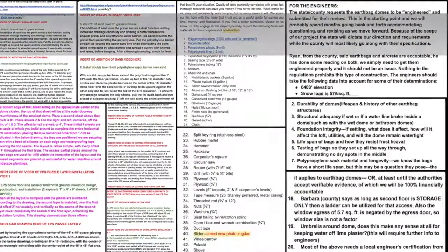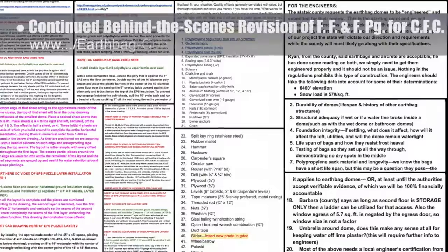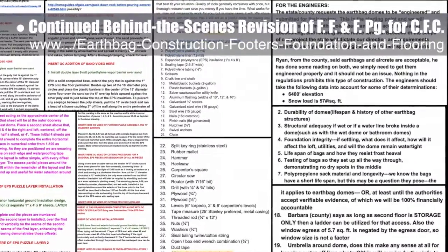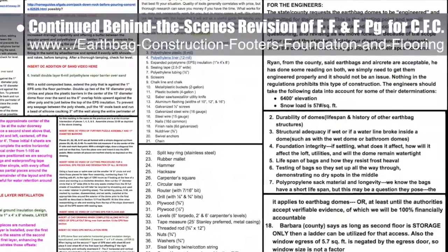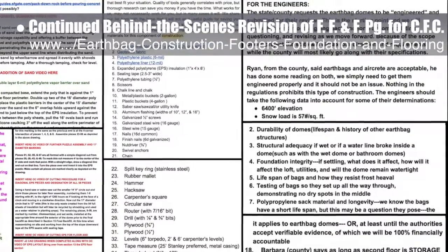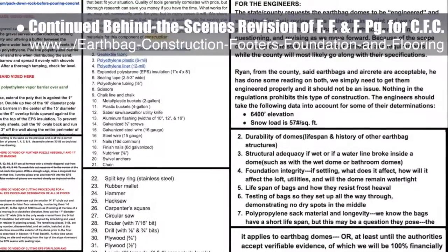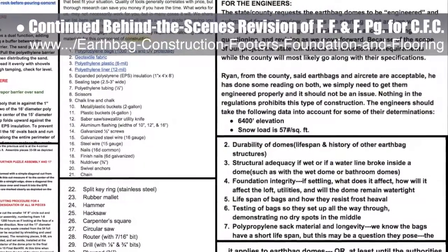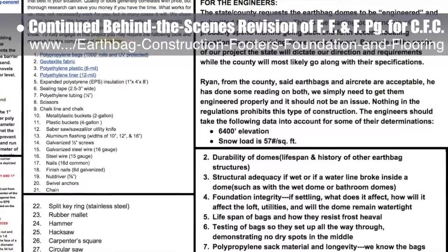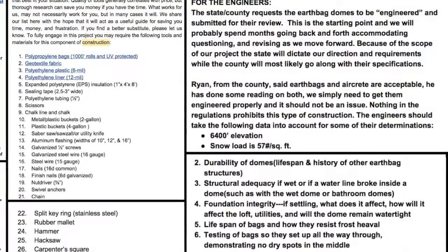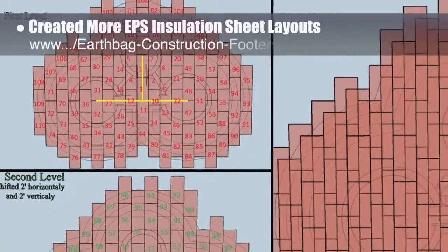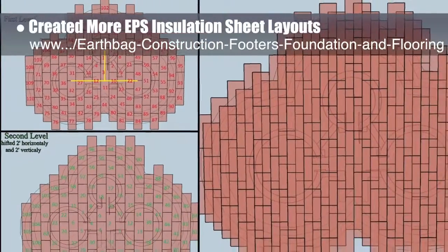The core team also put another 10 hours into the behind-the-scenes revision for the footers, foundations, and flooring page for the crowdfunding campaign we are developing. This week, we adapted the single-dome expanded polystyrene EPS layout to a three-dome cluster configuration. We also reviewed the openings doc for additional rewrites to the narrative for specifications and locations of the doors and windows, and created more EPS insulation sheet layout updates.